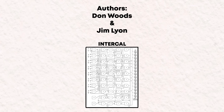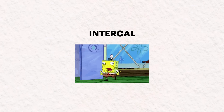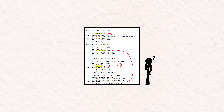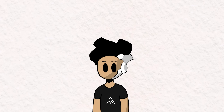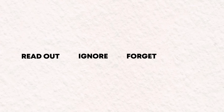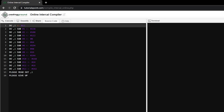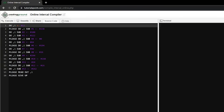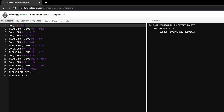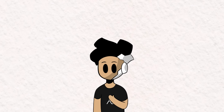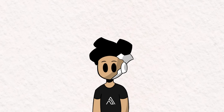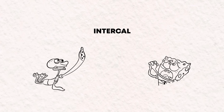Coming in at number 8 is Intercal — or its full name, Compiler Language With No Pronounceable Acronym. It was created by Don Woods and Jim Lyon. Intercal was designed to mock and parody existing programming languages at the time by being completely different from them. The syntax of this language is cryptic and confusing, and it contains a lot of features to make it as unpleasant as possible for programmers. It uses statements such as readout, ignore, forget, and modifiers such as please. What stands out the most is that last keyword: please. If the word please is not frequently used in the code, the compiler can reject it, considering the programmer insufficiently polite. If the modifier please is used too many times, the compiler can reject the code again, stating that the programmer is overly polite. I have never come across an error message that asks me to beg and plead a certain amount of times for a program to run properly.